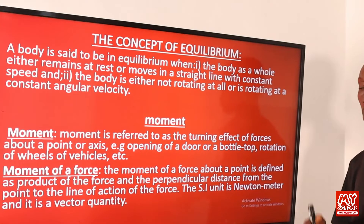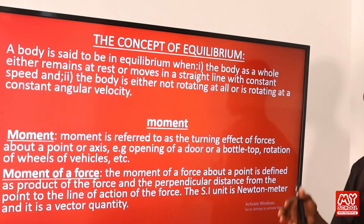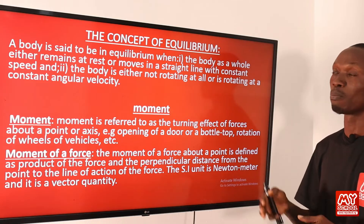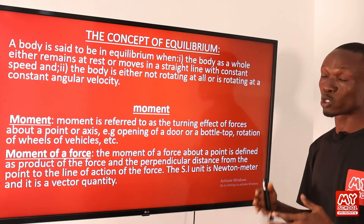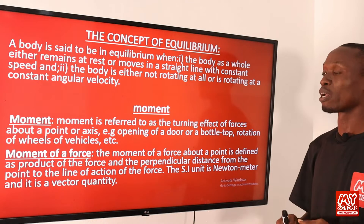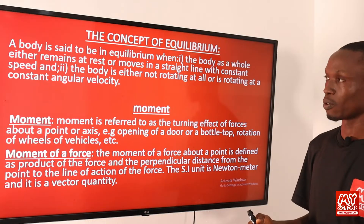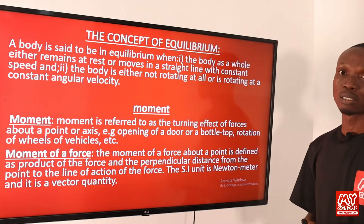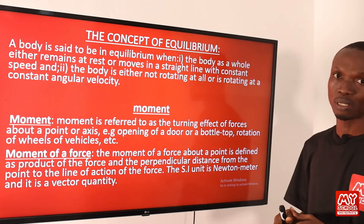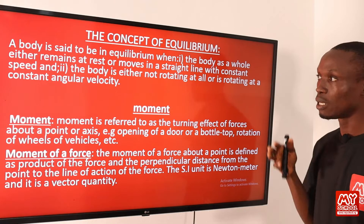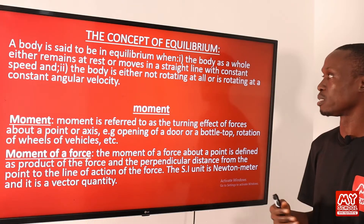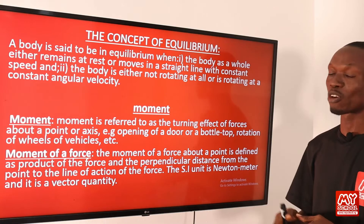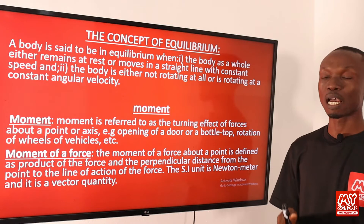Overall, for a body to be in equilibrium, both the net external forces and the net external torque acting on the body must be equal to zero. Equilibrium can be static or dynamic. Equilibrium is static when the body is at rest and does not rotate. Dynamic equilibrium means the body is moving with a constant linear velocity or rotating with a constant angular velocity.